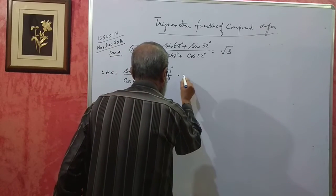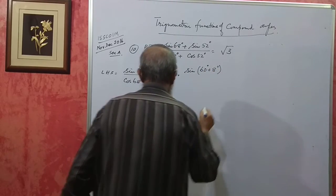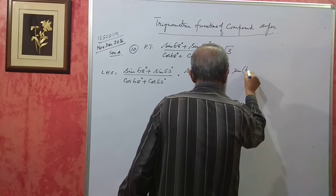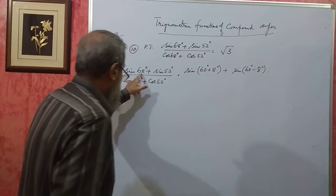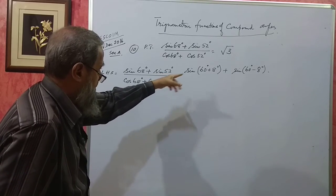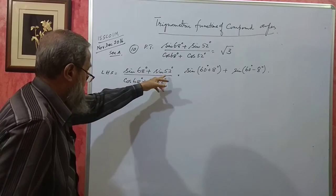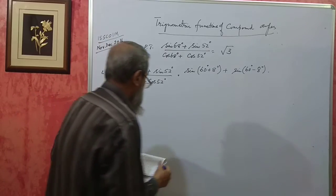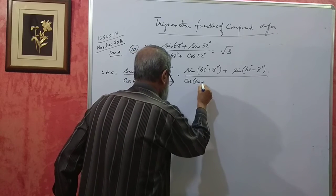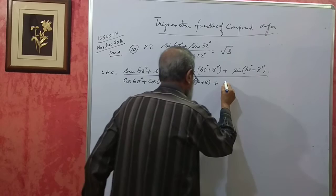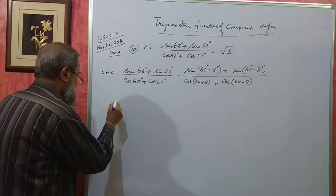68° can be written as 60° + 8°, and 52° can be written as 60° − 8°. So we have sin(60°+8°) + sin(60°−8°) divided by cos(60°+8°) + cos(60°−8°). You can make a number of problems on this pattern and practice them. Now expand it.